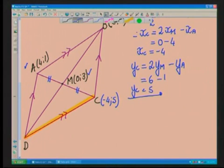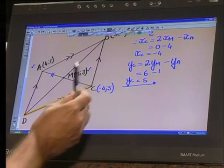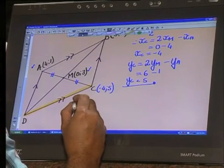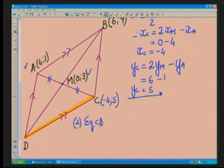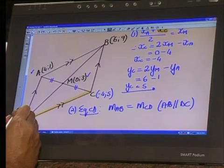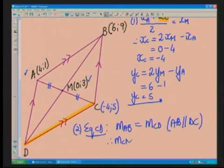We want the equation of the line CD. To find the equation of a straight line, you need two bits of information: either two points on the line, which we don't have, or you need the gradient of the line and a point. This is a parallelogram. Because these two sides are parallel, we can say immediately that the gradient of AB is equal to the gradient of CD. Why is that so? Because line AB is indeed parallel to DC.